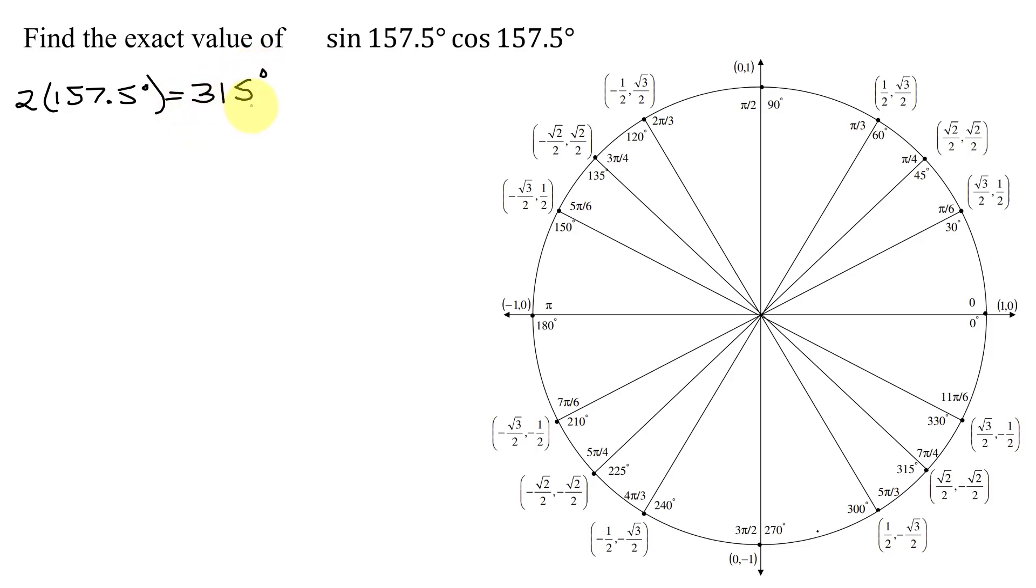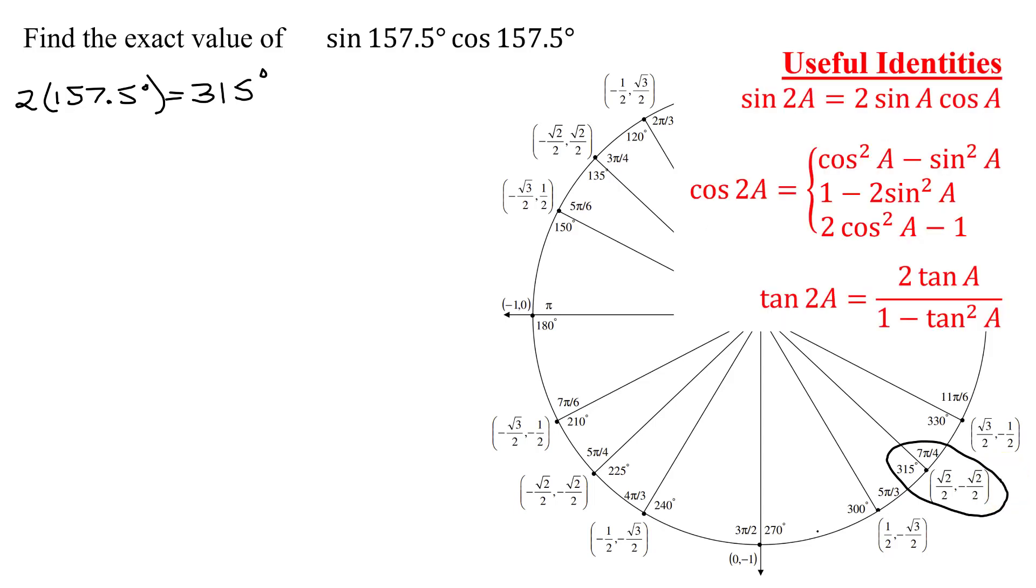Now, is 315 degrees on the unit circle? Yes, it is over here. So I might be able to use a double angle formula. And here are the double angle identities for sine of 2A, cosine of 2A, and tangent of 2A.